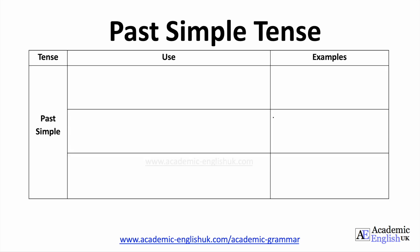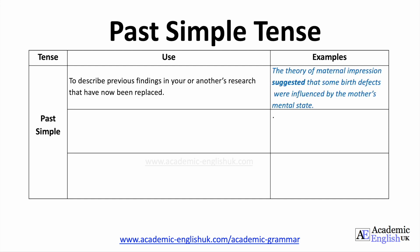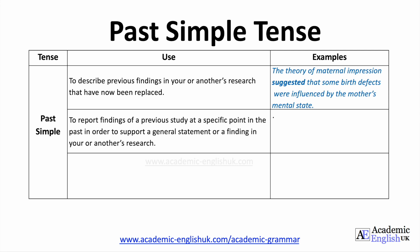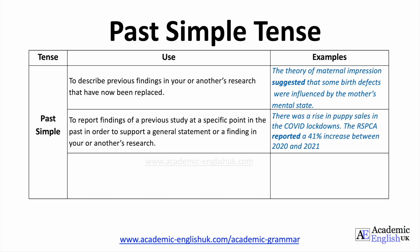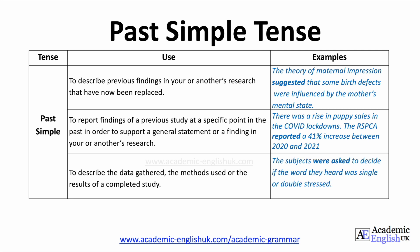Now we'll look at the past simple. There are three main uses here. The first is to describe previous findings in your or another's research that have now been replaced. The second is to report findings of a previous study at a specific point in the past in order to support a general statement or finding. The third is to describe the data gathered, the methods used, or the results of a completed study.